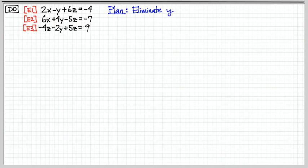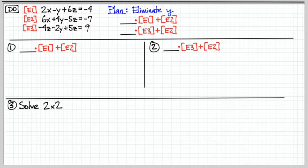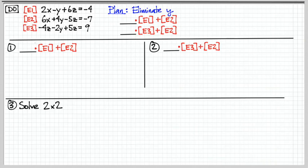Here's a problem for you to do on your own. Follow this plan where you eliminate y, so we're all doing it consistently. You can do it now or next time we meet.